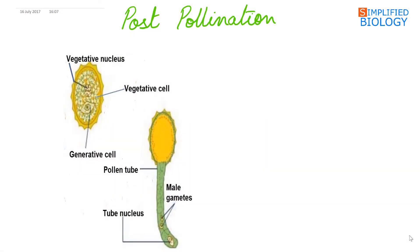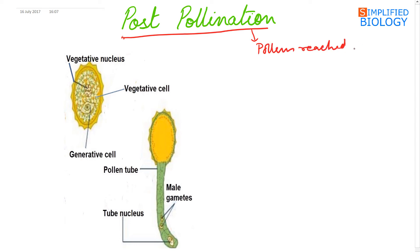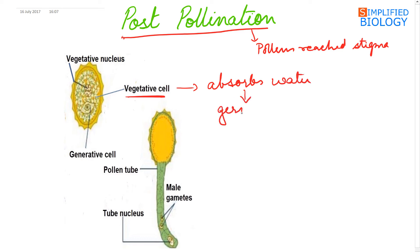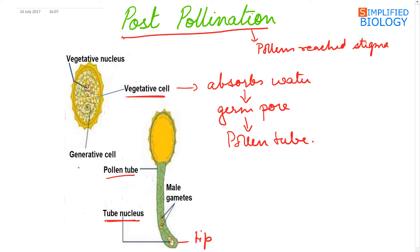Further development occurs after pollination — that is, post-pollination — when the pollens have reached the stigma. The vegetative cell of the pollen grain absorbs water and comes out of the germ pore, forming the pollen tube. The nucleus of the vegetative cell is found at the tip in the form of the tube nucleus, while the generative cell has divided to form two male gametes which lie behind the tube nucleus in the pollen tube.